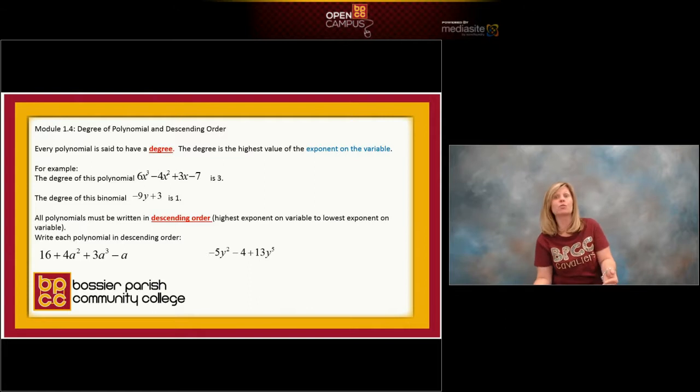If we look at our next polynomial, which is called a binomial because it's only two terms, if we look at our first term, -9y, again there's a variable y. I do not see an exponent, so it's understood to be the number one, so that term has an exponent of one.